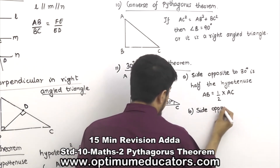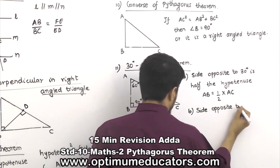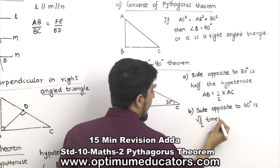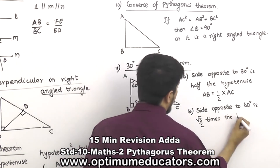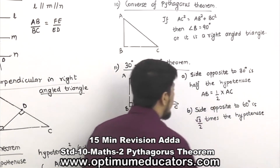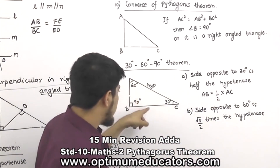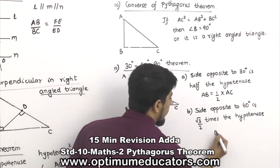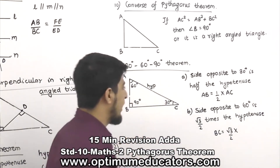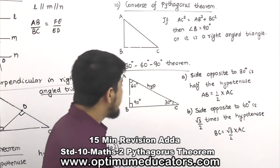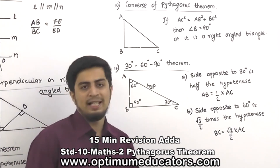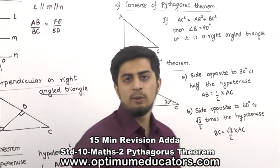Property 2 of the 30-60-90 theorem: the side opposite to 60 degrees is root 3 over 2 times the hypotenuse. The side opposite to 60 degrees is BC, so BC equals (√3 / 2) × AC. This completes the 30-60-90 theorem.